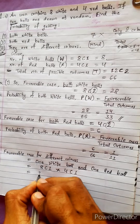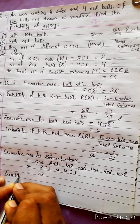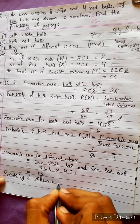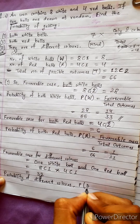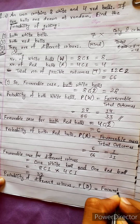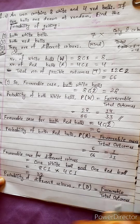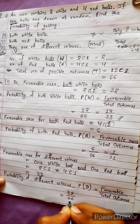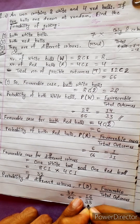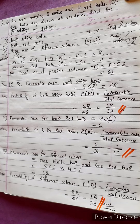Now we have the favorable case: 32. Probability of different colors, P(D), equals favorable cases divided by total possible outcomes. Favorable case is 32, total outcomes is always 66. So 32 upon 66 simplifies to 16 by 33. Yes, this is the answer. We have got all three answers correct. Now it's time to do the next question.